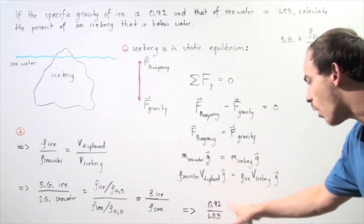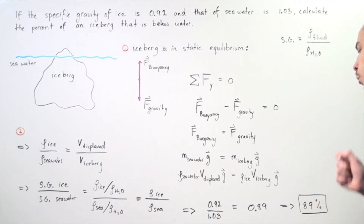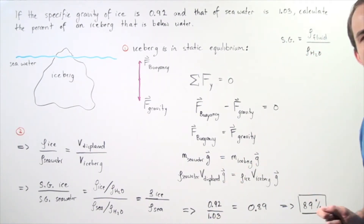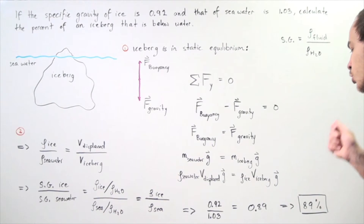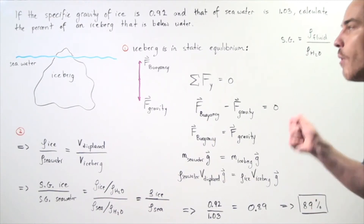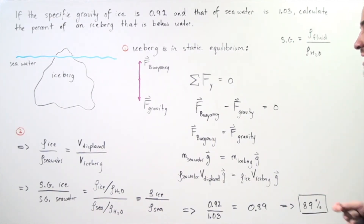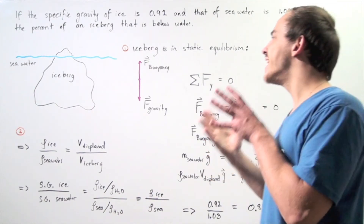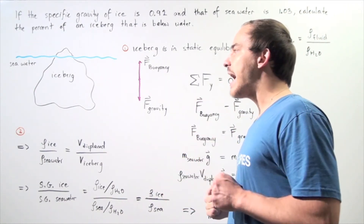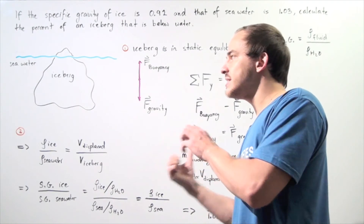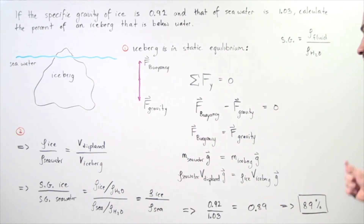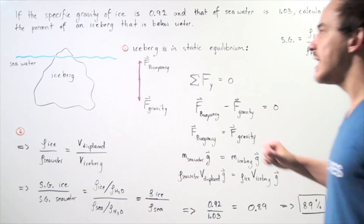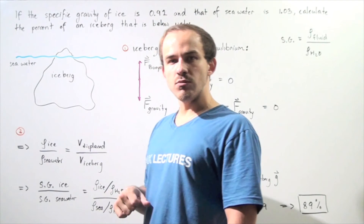This quantity is approximately 0.89. Multiplying by 100%, we see that approximately 89% of the entire iceberg is found below the seawater, and only about 11% is found above seawater — so we can only see about 11% of the iceberg.